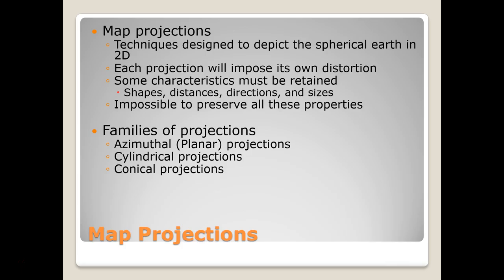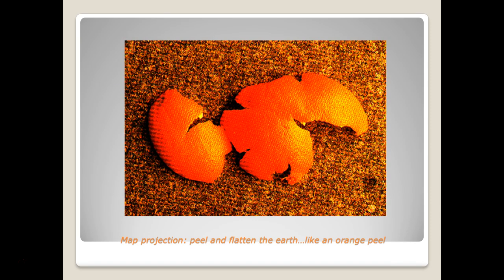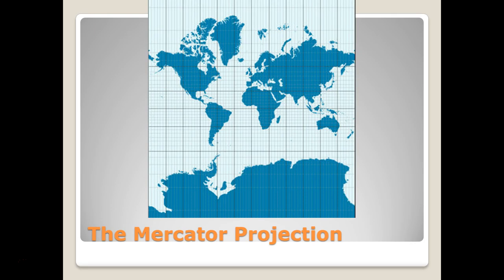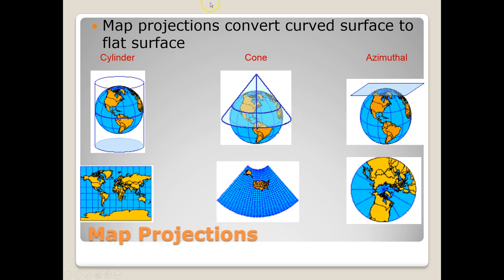There are three families of projections used to flatten the round Earth to a flat object. The first is a cylindrical projection. If we conceptualize the Earth and put a piece of paper around it in a cylindrical shape, the place where that paper touches the Earth's surface is known as the line of tangency. At that line is where the map is the most accurate. As we move away from that line, properties get more distorted.